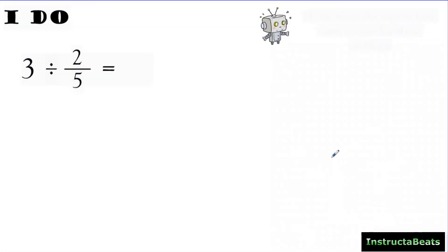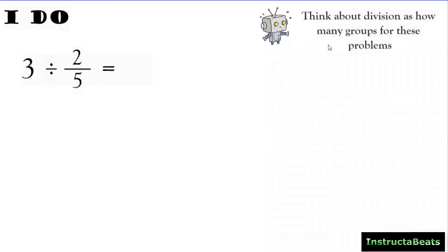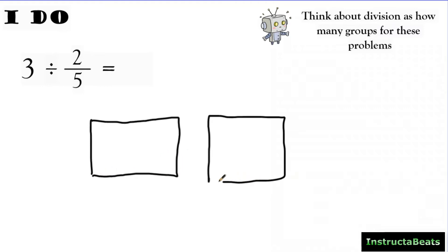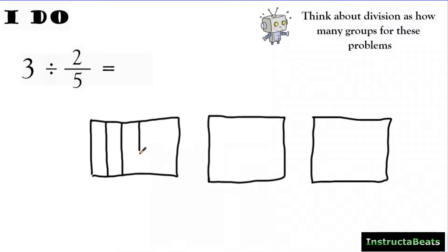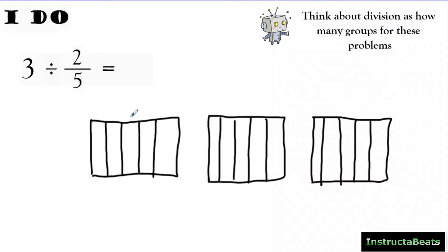Here's our 'I do' problem: we have 3 wholes and we're dividing by 2/5. We're going to think about division as 'how many groups' when solving these problems. Step one: draw out our three wholes — there we go, each representing one. My denominator is five, so I'm going to split each whole into five equal groups. Now we're thinking about division as having 2/5 in each group. Here is one group of 2/5.